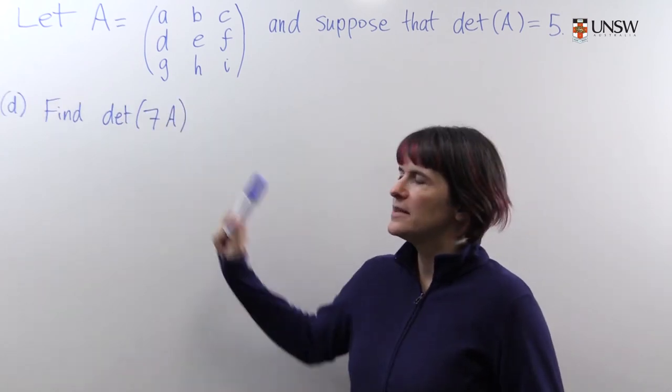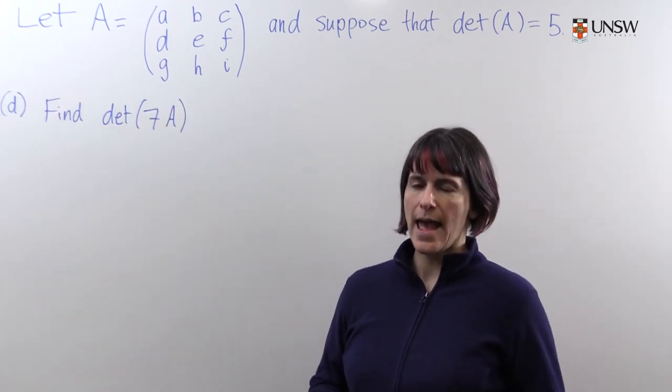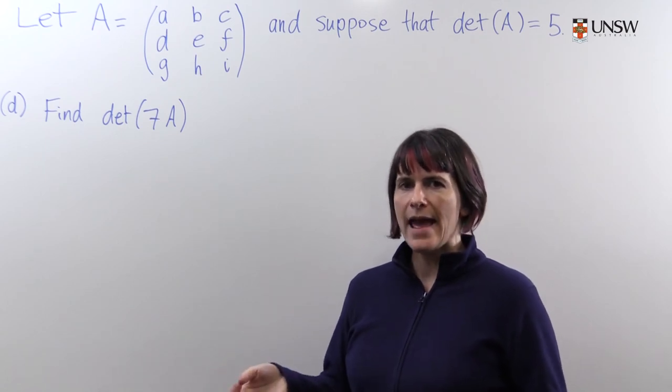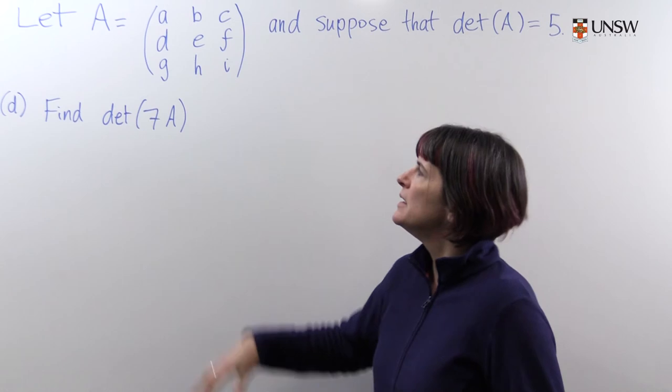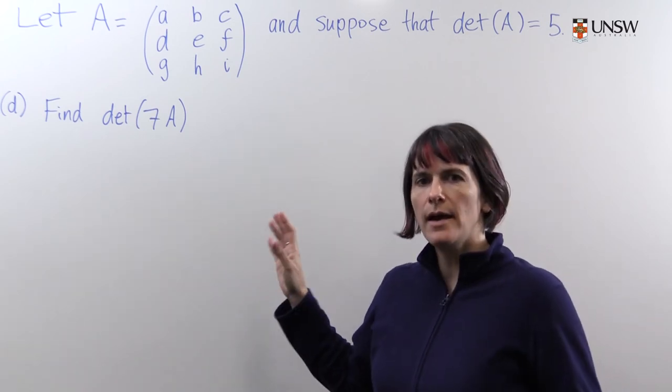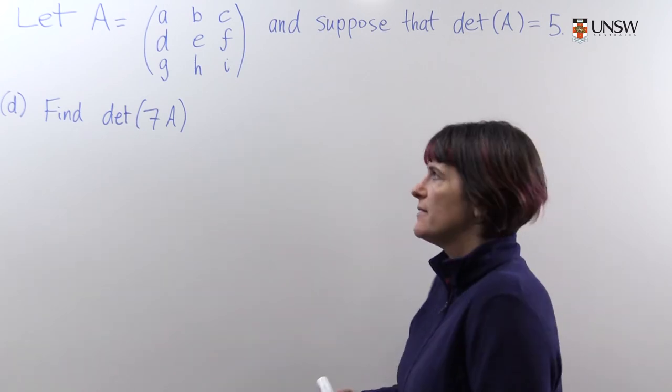Now we want to find the determinant of seven times A. This is similar to part A where we had a row that was multiplied by a scalar. But here we multiplied the entire matrix A by seven. So what happens?